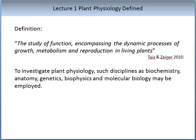Let us define plant physiology. Plant physiology is a wide scope of content and can cross many disciplines. We are going to use the Teys and Zeiger definition, which states it is the study of function encompassing the dynamic process of growth, metabolism, and reproduction in living plants. To investigate plant physiology, such disciplines as biochemistry, anatomy, genetics, biophysics, and molecular biology may be explored. The most basic terminology in this subject is to define a plant.